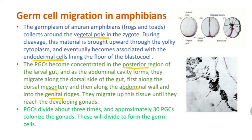From the dorsal mesentery, PGCs migrate along the abdominal wall into the genital ridges, and from the genital ridges they migrate into the developing gonads. PGCs divide about three times and approximately 30 PGCs reside in the gonads, where they divide to form germ cells — either sperm or ova.